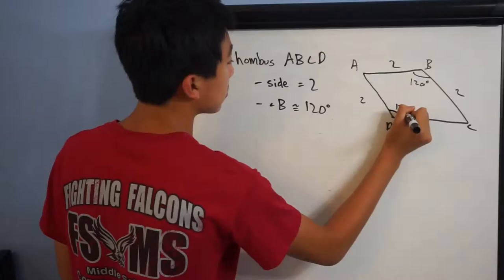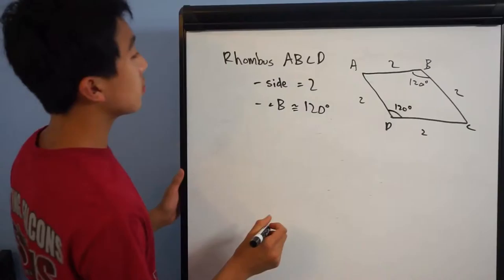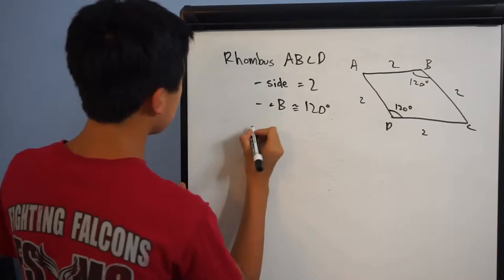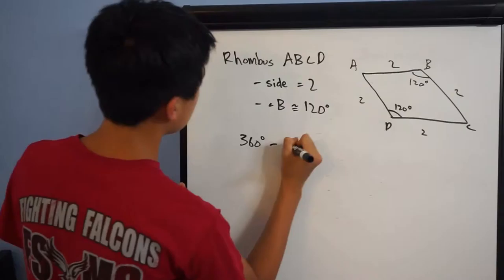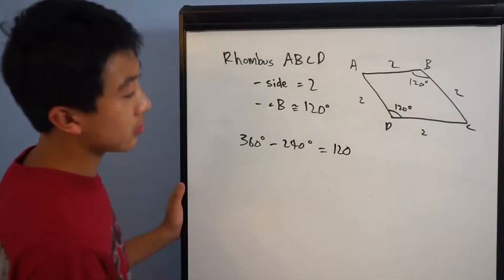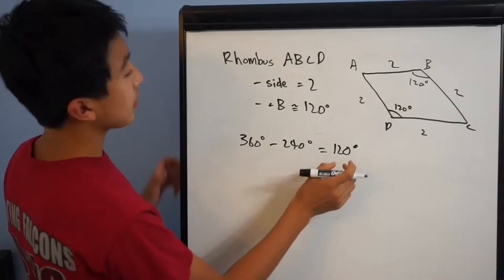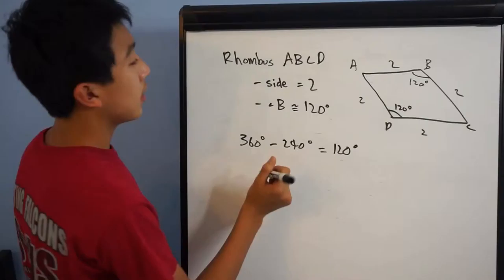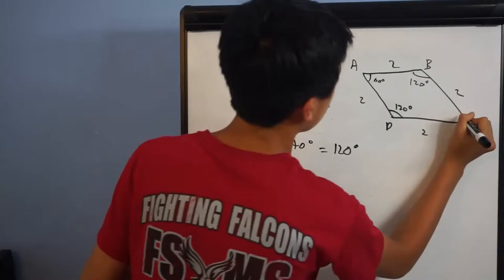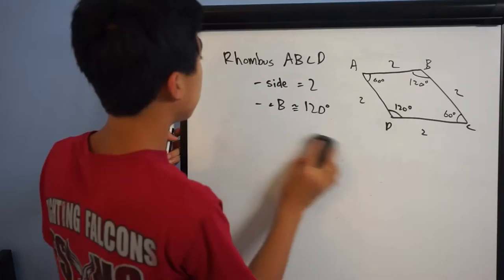In turn, this means angle D is also 120 degrees, because by the definition of a rhombus, the opposite angles are equal. Since we know that the total sum of angles in a quadrilateral is 360 degrees, and we've already used 240 degrees — two angles each of 120 degrees — we have 120 degrees left, which means angle A plus angle C has to sum up to 120 degrees. Since they're opposite angles, they're equal, which means angle A is 60 degrees and angle C is 60 degrees.